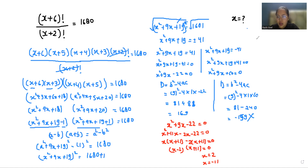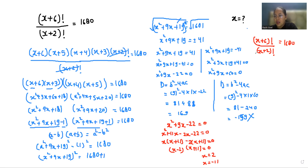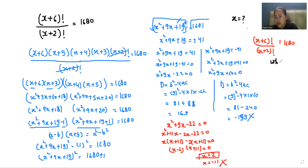We have two values, so we must check whether both are valid. Our expression is x plus 6 factorial by x plus 2 factorial, so the denominator cannot be zero or negative. If x equals negative 11, then x plus 2 equals negative 9, which is invalid. So we reject x equals negative 11.